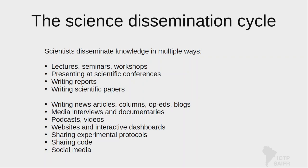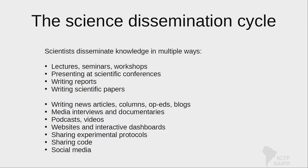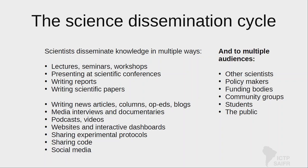In addition to these traditional mechanisms, there are all sorts of other ways scientists can disseminate information — some more geared towards the general public. Scientists tend to wear many hats, providing useful information to a variety of stakeholders. Today I really want to focus on two particular themes: thinking about papers and thinking about sharing code.